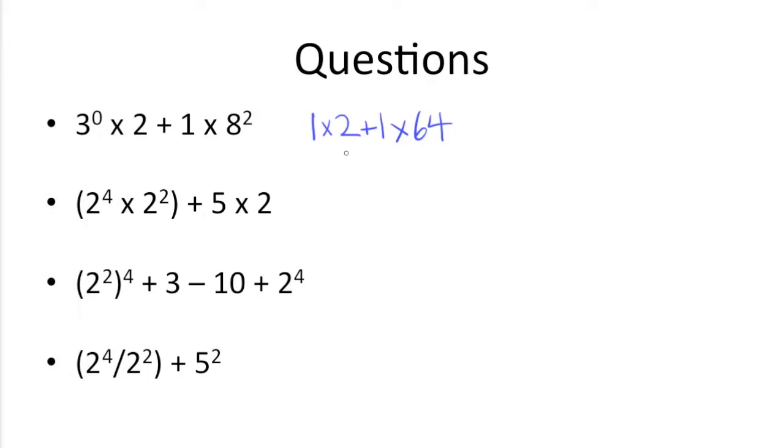Then we do multiplication before we do the addition. So we need to do this first, which is 1 times 2, which is 2, plus this, which is 1 times 64, which is 64. Then we add them up, and we get 66.